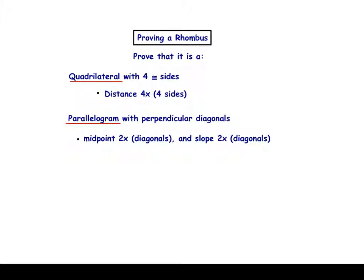Now on to proving a rhombus. You can simply prove that it's a quadrilateral with four congruent sides, skipping the step of first proving that it's a parallelogram. This is the easiest method to use, and that includes doing the distance formula four times, once on each side — that's the one I'm going to suggest you use and memorize. You could also prove that it's a parallelogram first by doing midpoint twice on the diagonals, with perpendicular diagonals using slope two times.